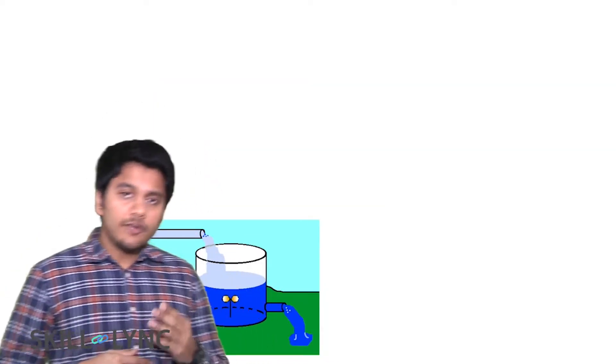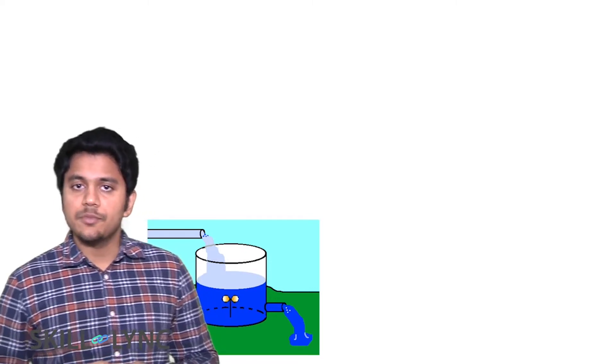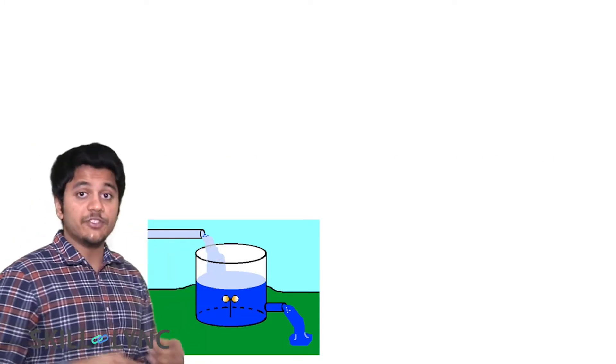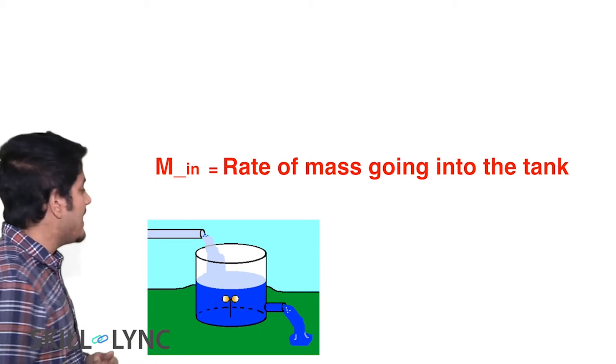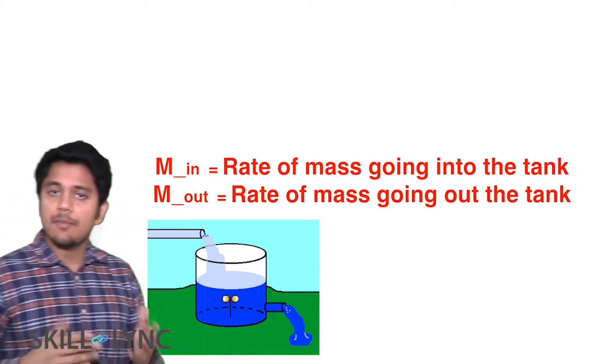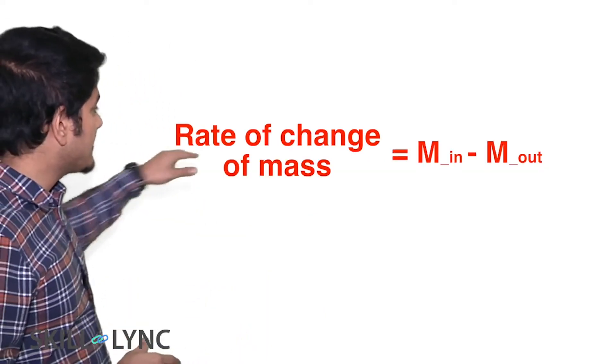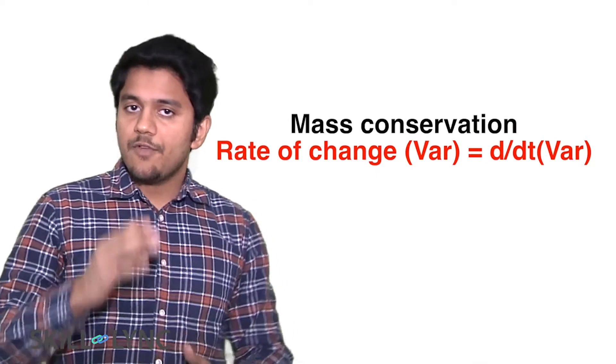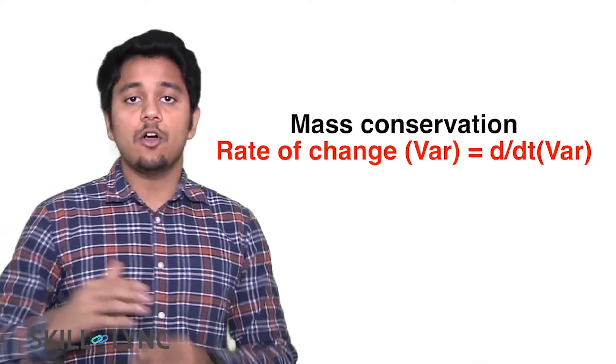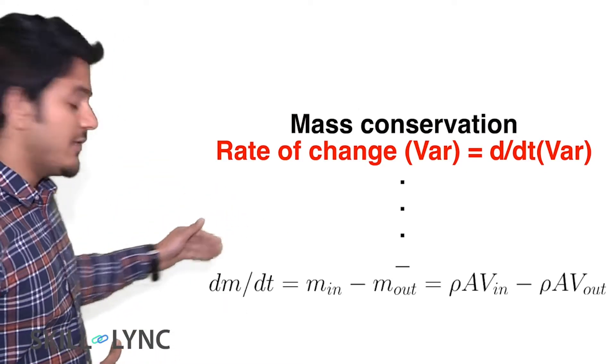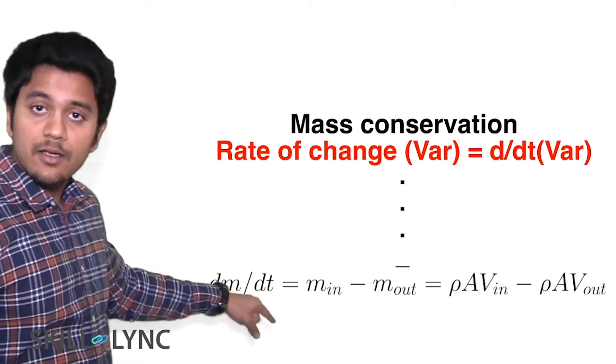Now to make it more interesting let us use variables instead of numbers. In this example I am going to refer to the mass that goes into the system, which is the tank, as m in and the mass that exits out of the system as m out. Now the rate of change of mass in the system can be represented as the mass coming in minus the mass that's going out. From calculus we know that rate of change of a variable is represented as d by dt of that variable, and hence this principle can be represented by the following equation: dm/dt is equal to m in minus m out. This is how you create a simple math model.